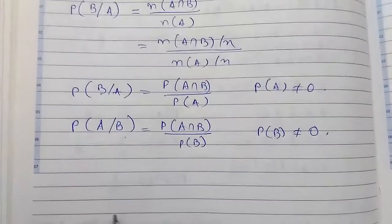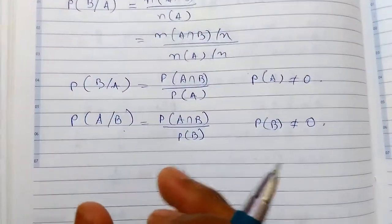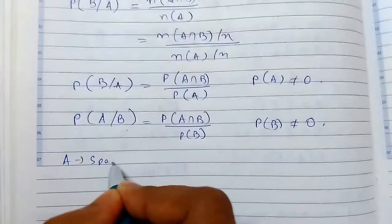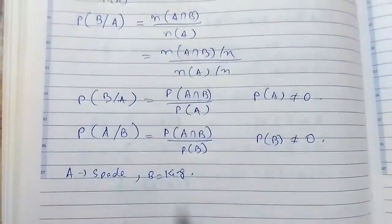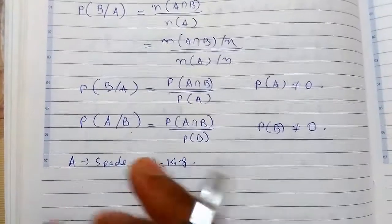I will just explain something like this. Suppose we need to draw a card from a full pack, and A is for spade and B is for king. Now we need to find the probability of the king, supposing that spade has occurred.